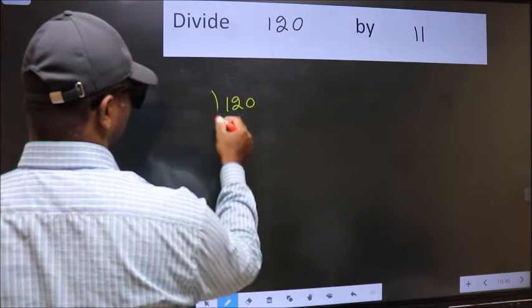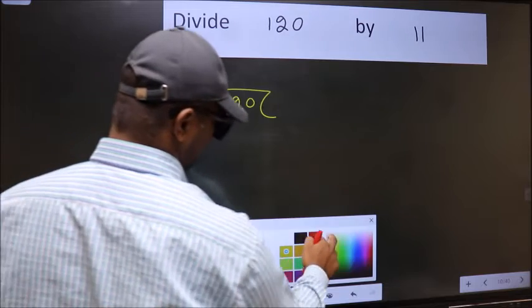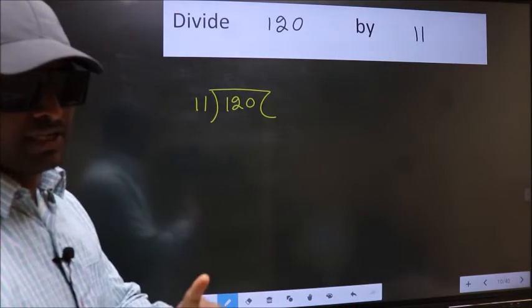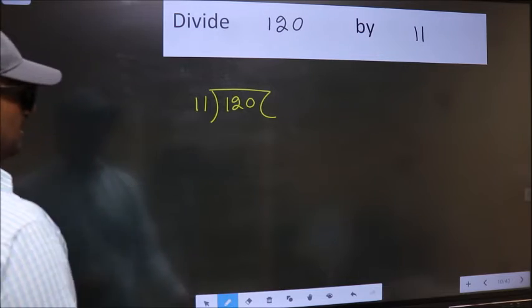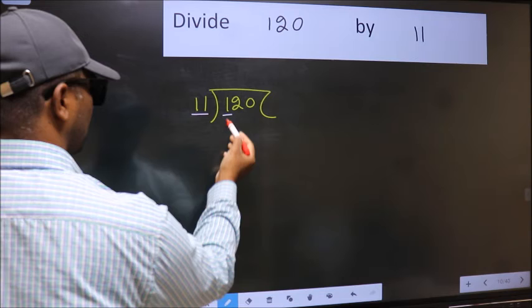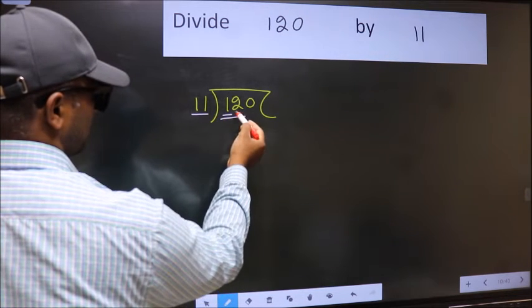120 and 11 here. This is your step 1. Next, here we have 1 and here 11. 1 is smaller than 11, so we should take two numbers: 12.